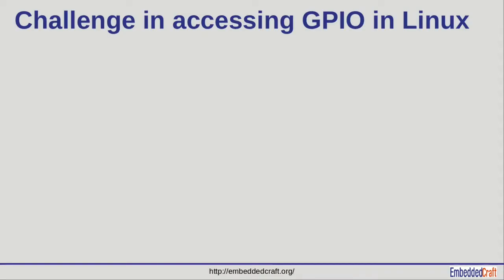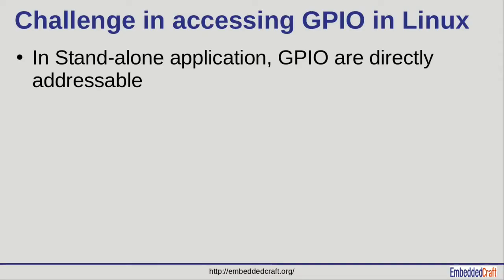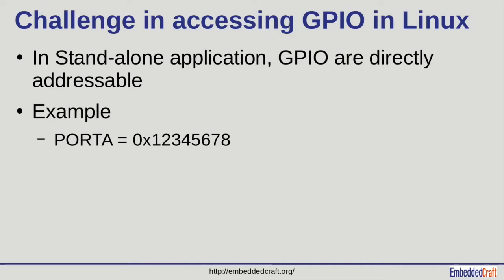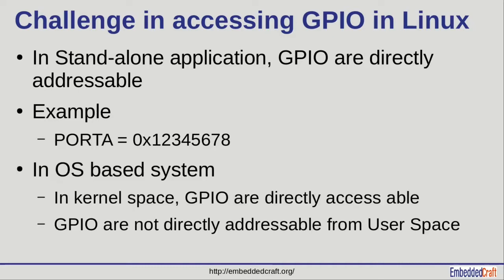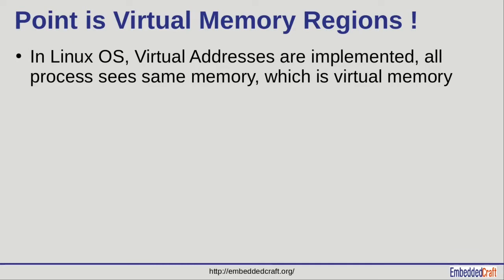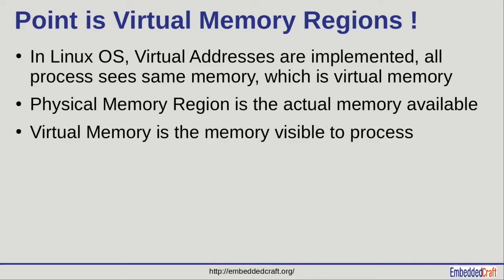Let us see more about GPIO. There are challenges to using GPIO on Linux, because in a standalone program GPIO registers are directly available — you can simply code like PORTA equals some value. But in an OS environment like Linux, GPIO registers are only accessible from kernel mode. GPIO is not directly addressable from user space. The answer to what is stopping access to GPIO registers or physical memory in user space is the virtual memory concept. Linux implements virtual memory, so a Linux process will see only virtual memory — physical memory is not visible to the process or application.